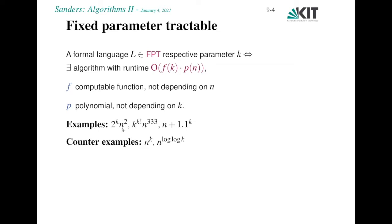Examples could be something like 2 to the k n squared or even horrendous things like k to the k factorial times n to the 333. But more typically, or more desirably, we will have complexities like a low order polynomial like order n plus an exponential function with a small basis like 1.1 to the k.